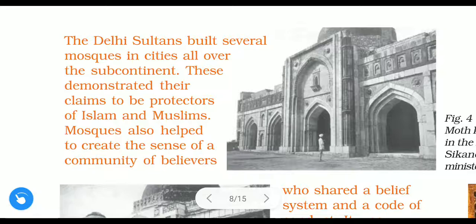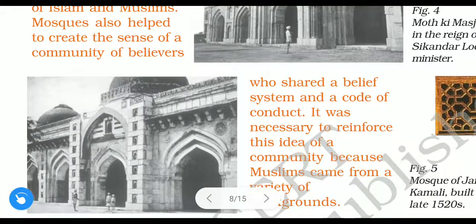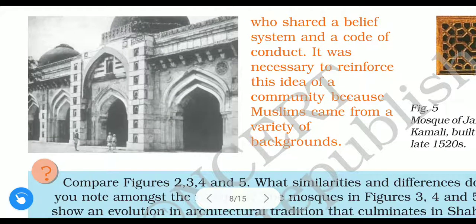The Delhi sultans built several mosques in cities all over the subcontinent. This demonstrated their claims to be protectors of Islam and Muslims. Mosques also helped to create a sense of community among believers who shared a belief system and code of conduct.